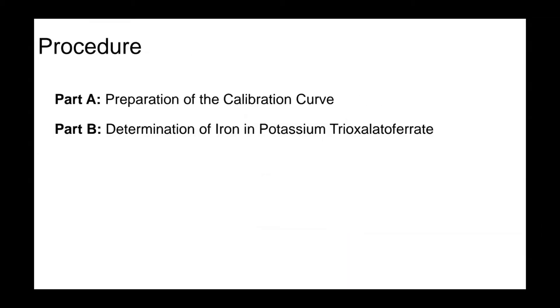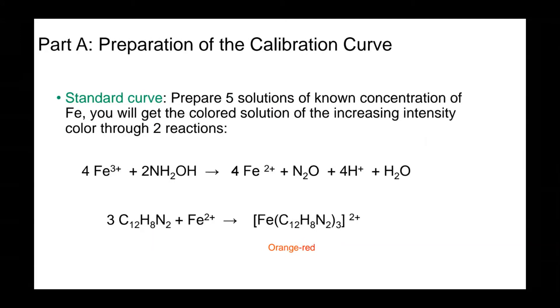For the experimental procedure, it is divided into two parts. Part A is the preparation of the calibration curve. In this part, you are going to be working with a partner. Part B is the determination of iron in potassium trioxalato ferrite. In Part A, preparation of the calibration curve, you are going to prepare the standard curve using five solutions of known concentrations of iron. You will get colored solutions of increasing intensity through two reactions.